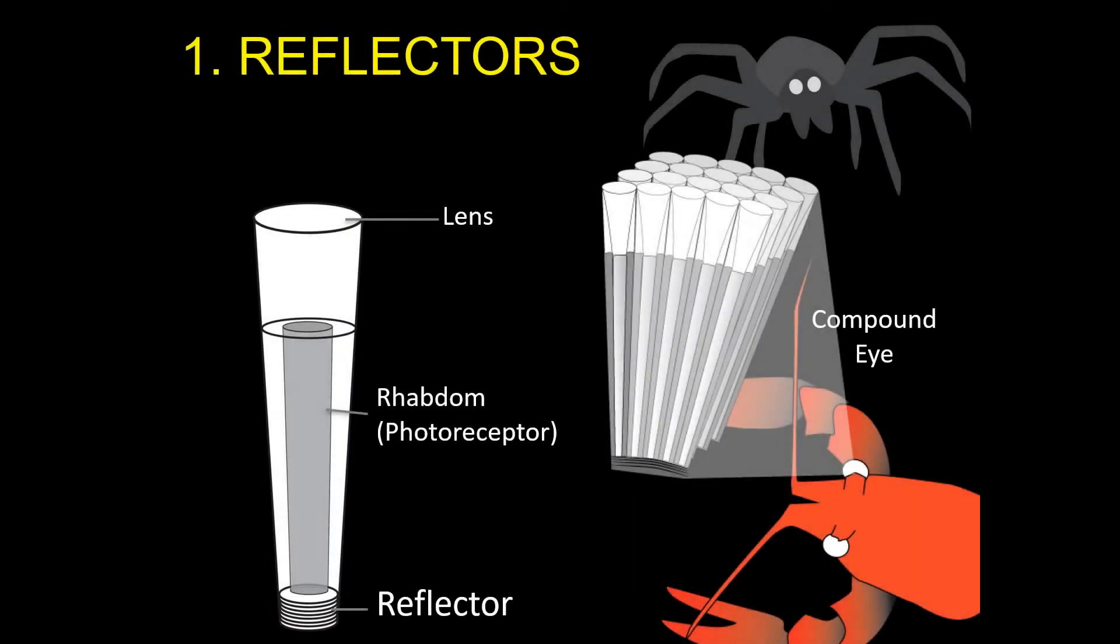Reflectors are typically located behind the retina, whether it be a camera-type eye of a cat or a spider, or a compound eye of an insect or a crustacean, which is made up of hundreds or thousands of individual units.